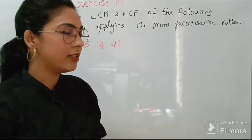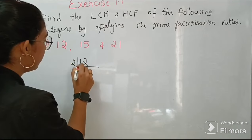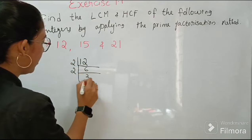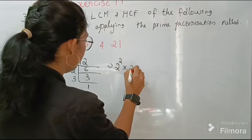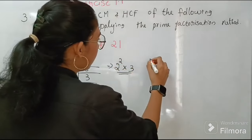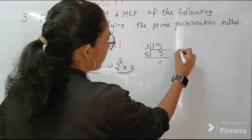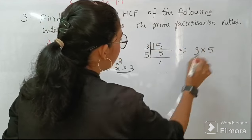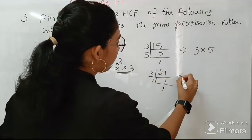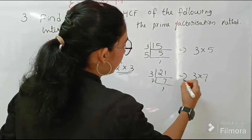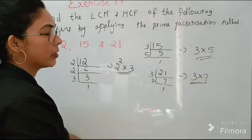Factorization is already discussed in the last classes. 12 can be written as 2 times 6 times 2 times 3. That is factors of 12 is 2 square into 3. Then factors of 15: 3 times 5. Then 21: 3 times 7. So factors of 15 is 3 into 5 and factors of 12 is 2 square into 3.